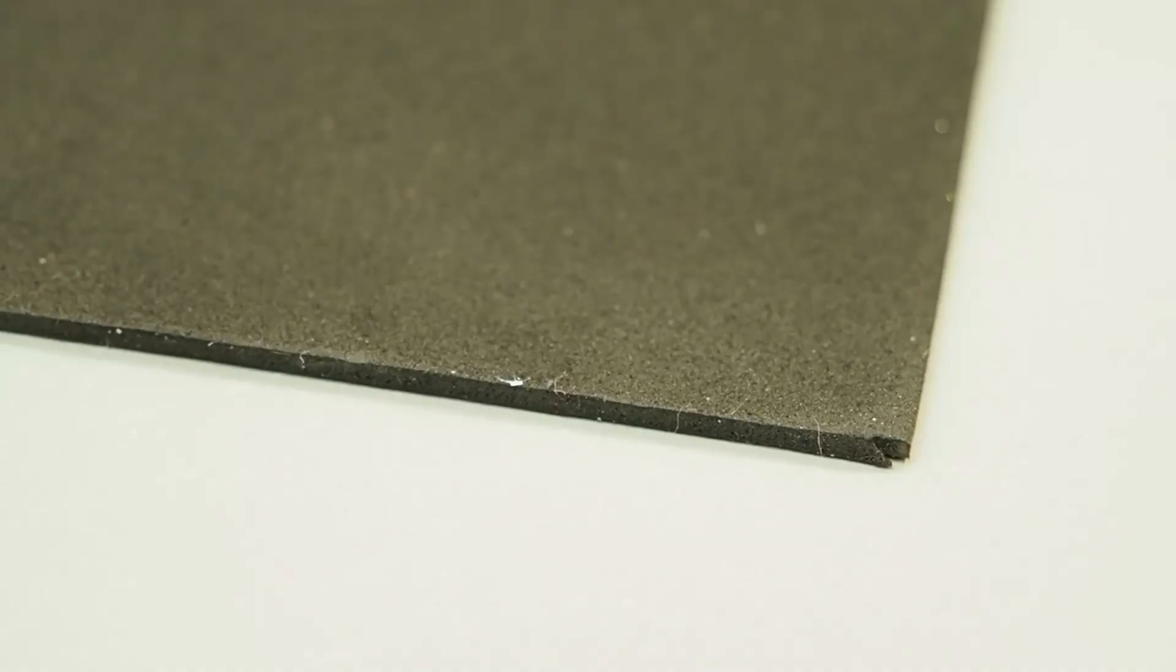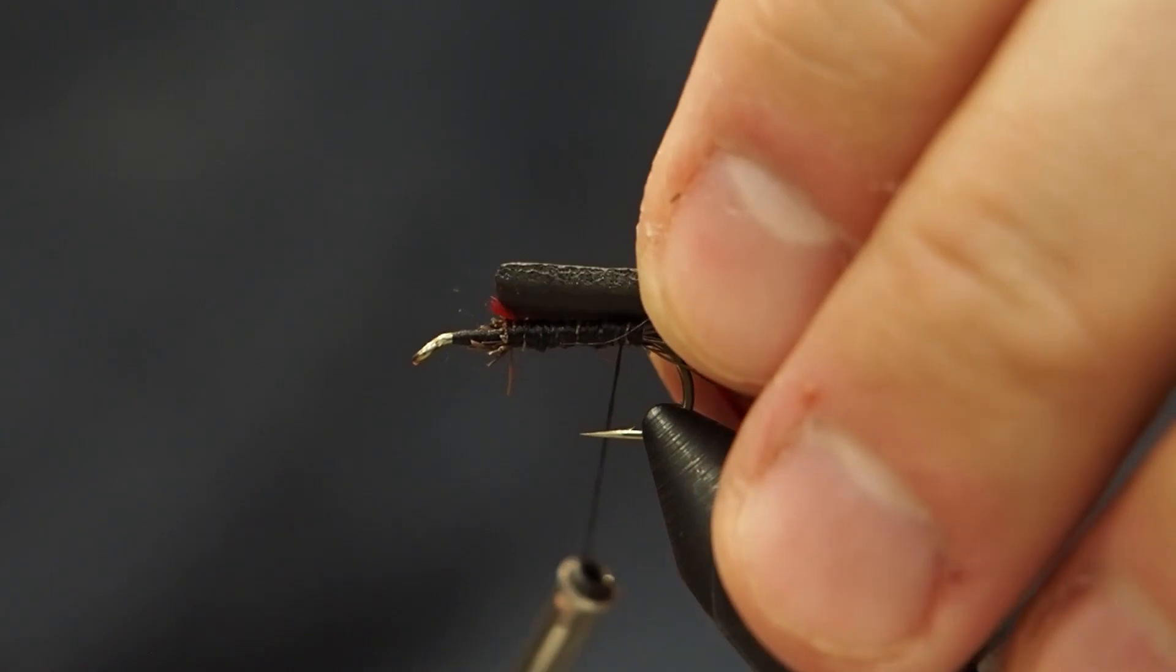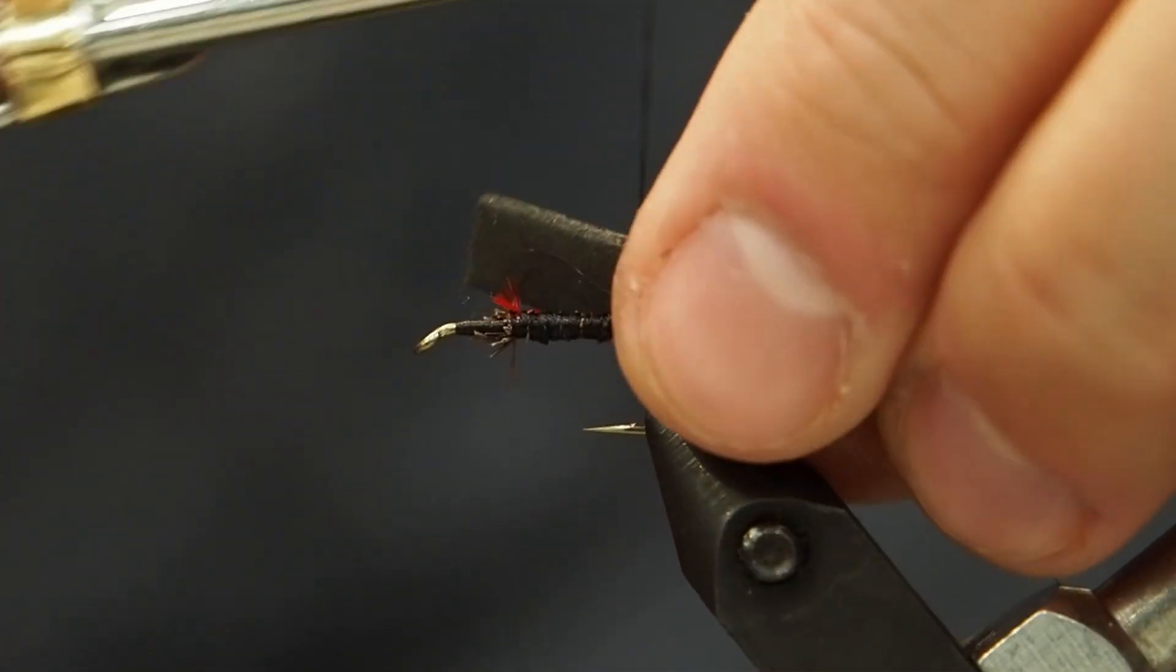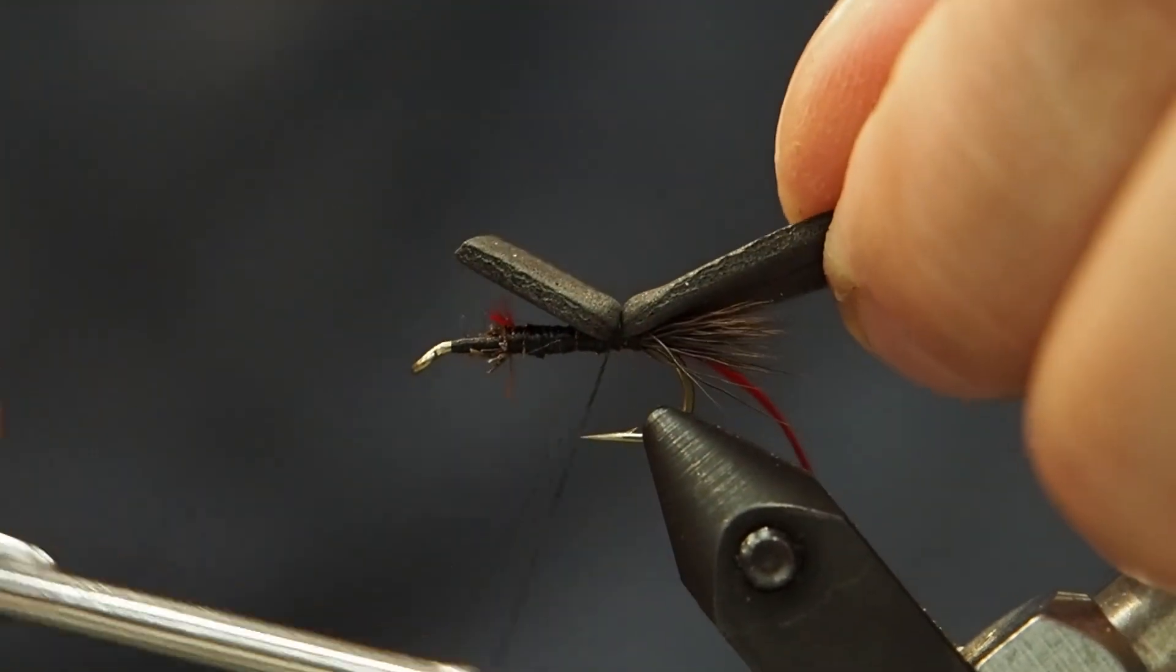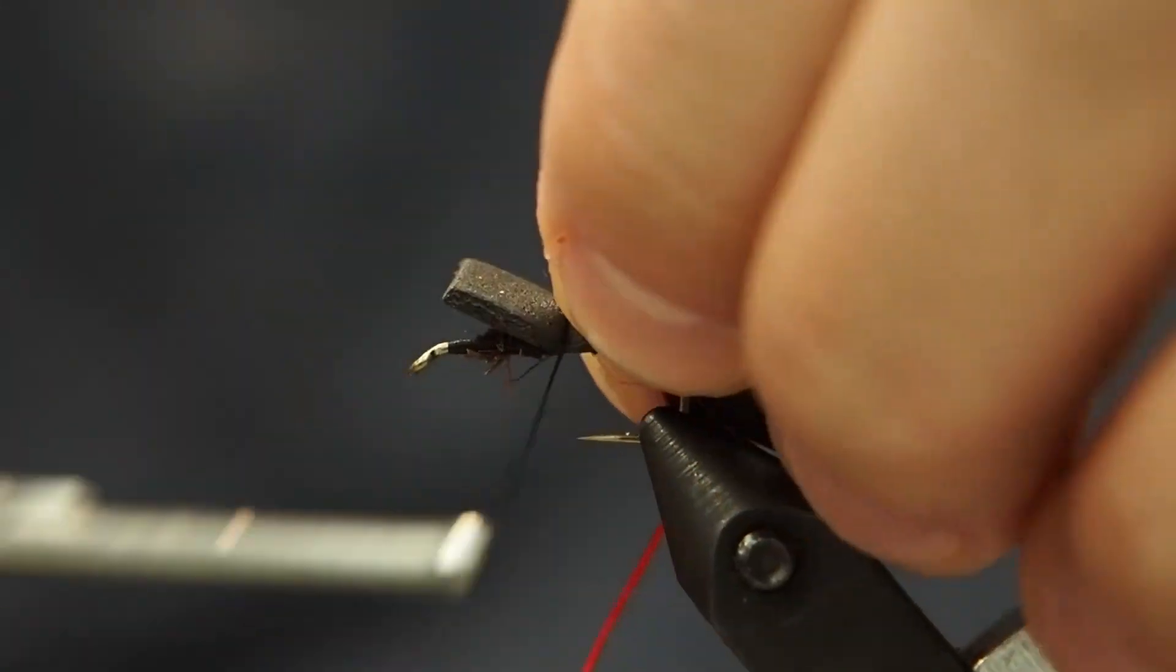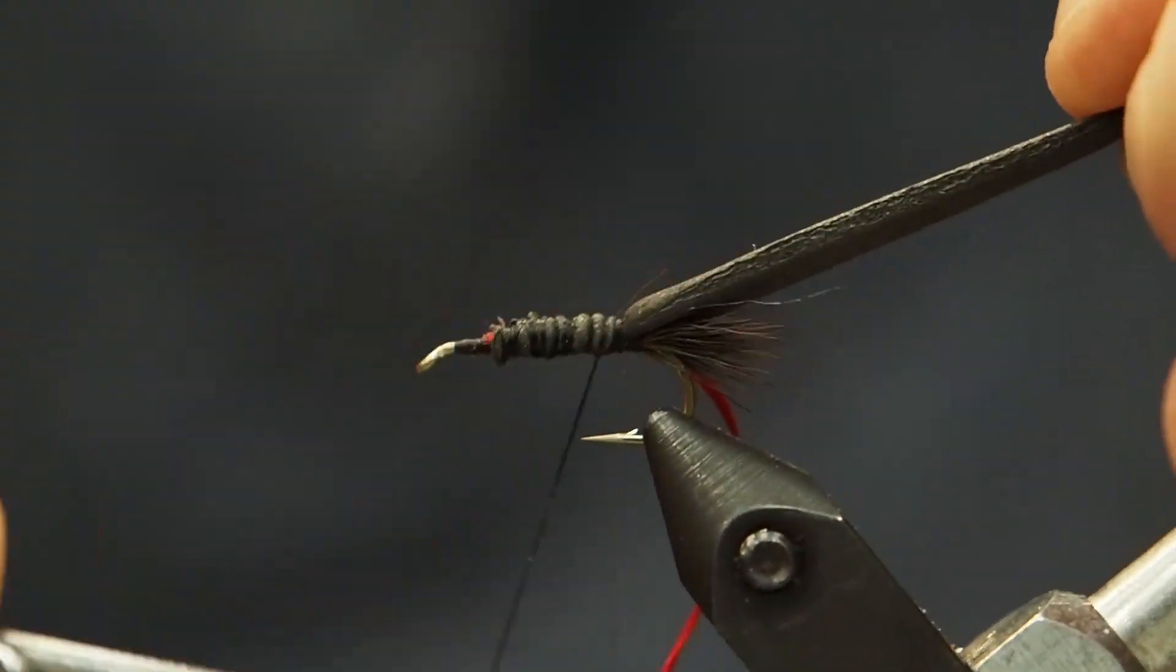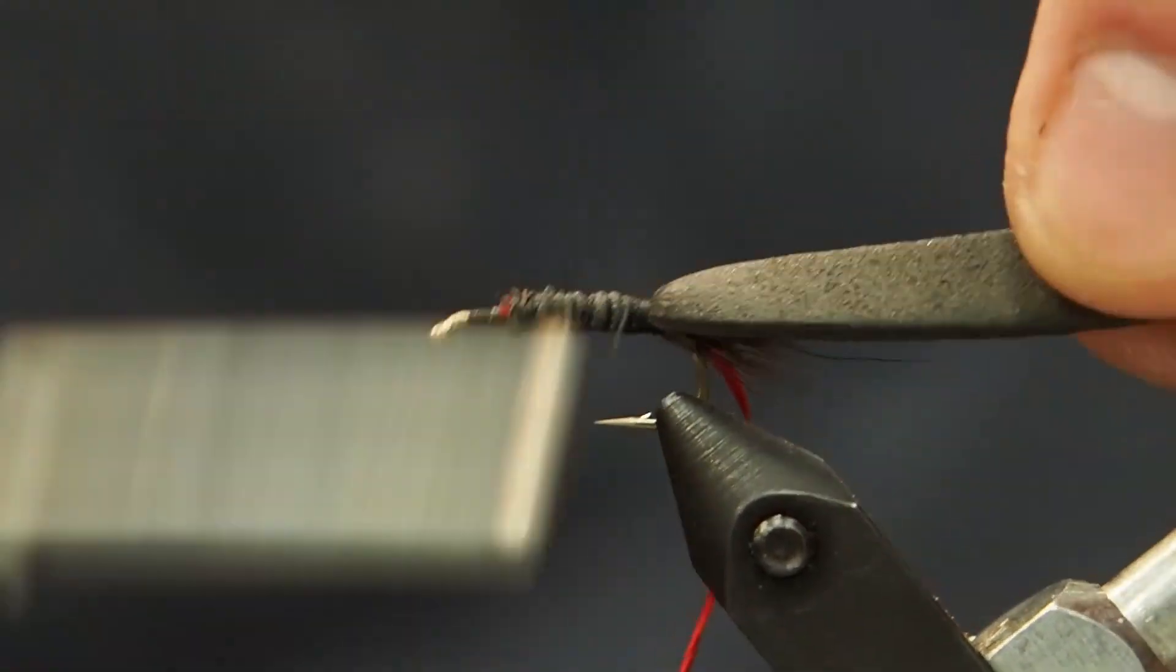Now we're going to go to our two millimeter classic closed cell foam. I'm going with black here, but again you could do a tan color if you wanted some variety. I'm going to tie that in again right at the back, but notice I'm also using that foam to build up the body. I'm not just clipping it off right where I tied it in, but I'm actually using it to get some bulk.